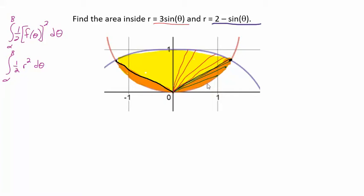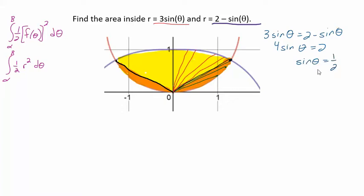To find our orange area we have to find the points of intersection. We just set up an equation and solve it. We get sine theta equals one half, and the angles where sine equals one half are 30 degrees or pi over 6, and 150 degrees or 5 pi over 6. So this point right here, this angle, is pi over 6.